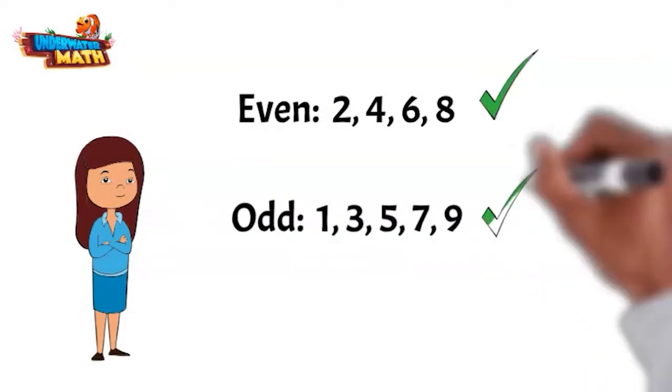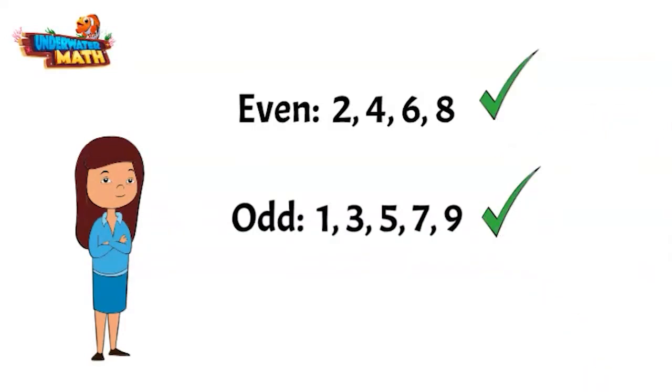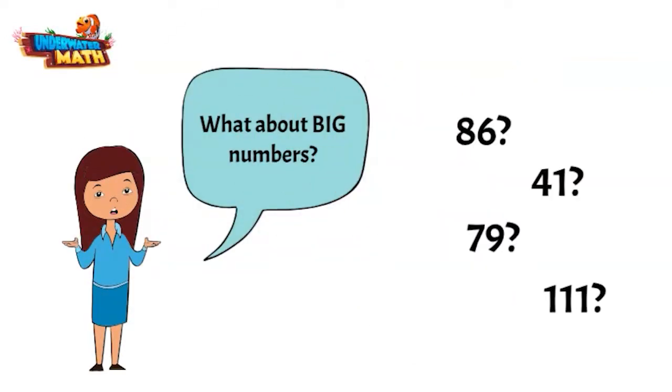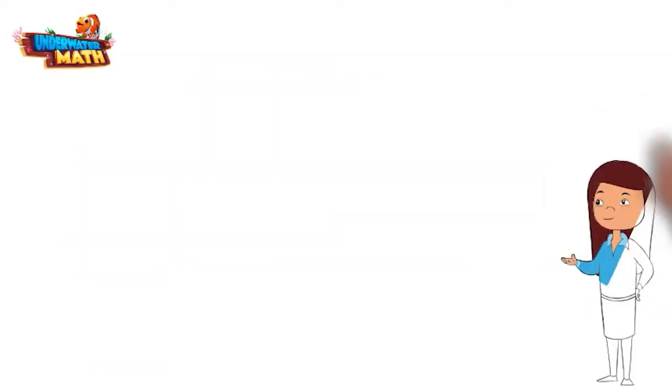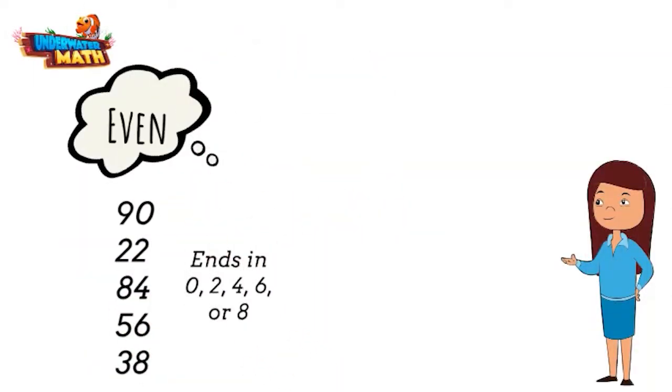Bethany knows when a number is even or odd if it's under 10. But what about the bigger numbers? A number is even if it ends in an even number, like 0, 2, 4, 6, or 8. If it ends in any of these numbers, the entire number is divisible by 2.